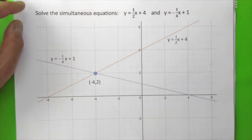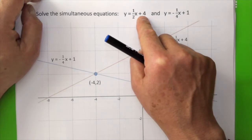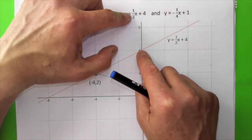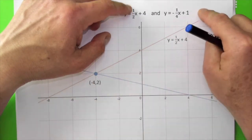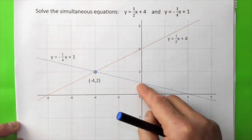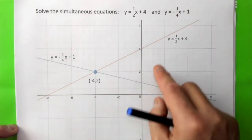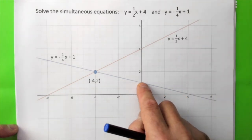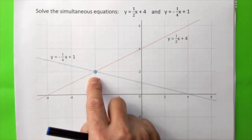For y equals half x plus 4, the intercept is 4. The gradient of one half means a run of 2 and rise of 1, giving us enough points to draw the line. For y equals minus quarter x plus 1, the intercept is (0, 1). Starting from there, the gradient means a run of 4 and drop of 1, or a negative run of 4 and rise of 1. The solution where the lines meet is (minus 4, 2).